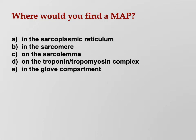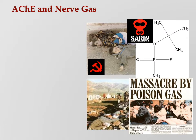What better way to start an annotated PowerPoint than with a quiz. Where would you find a MAP — in the sarcoplasmic reticulum, in the sarcomere, on the sarcolemma, on the troponin-tropomyosin complex, or in the glove compartment? MAP stands for Muscle Action Potential, and it's on the sarcolemma, which is the plasma membrane of a muscle cell or muscle fiber. It runs down the membrane, down the T-tubules, then alongside the terminal cisterns of the sarcoplasmic reticulum, where it opens the calcium channel 'garage doors' and lets the calcium out.